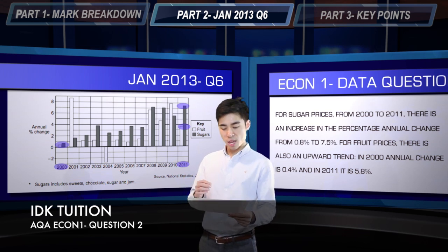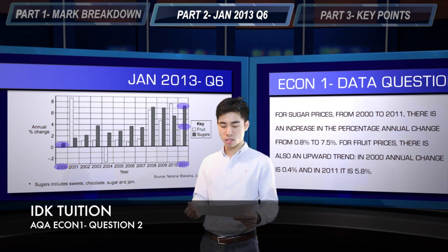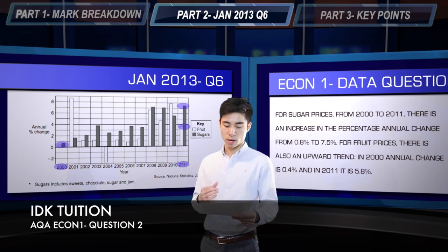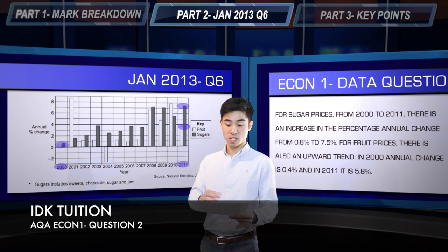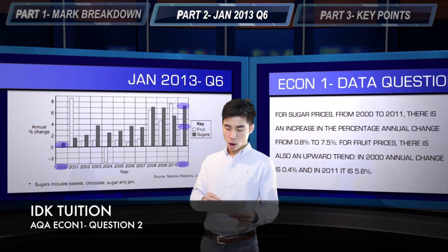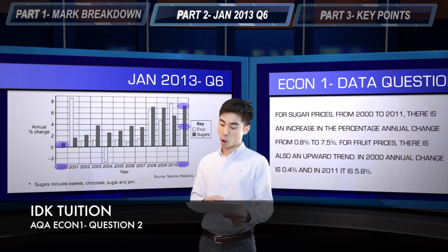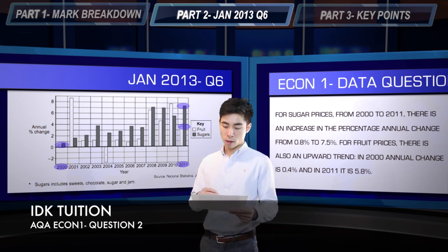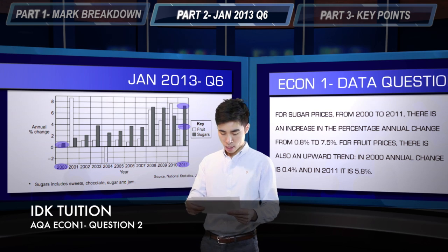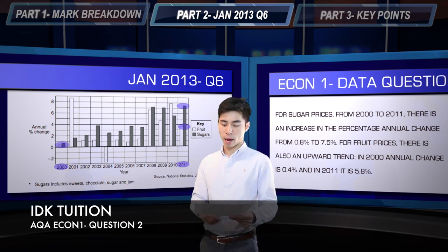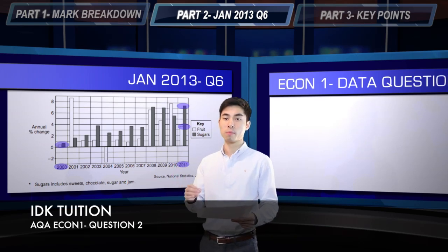Similarly for fruit, there's an approximate upward trend, similar to the trend in sugars. Taking the start and end points of the data series: in 2000 the percentage annual change for fruit is about 0.4%, whereas in 2011 the percentage increase is about 5.8% — so again there's an increase over that time series.